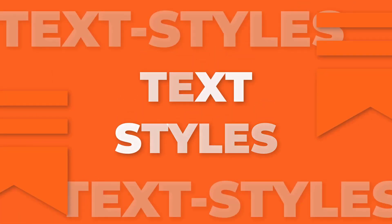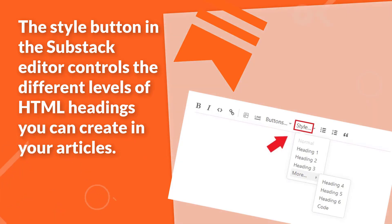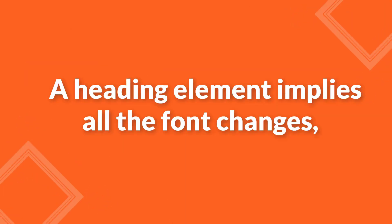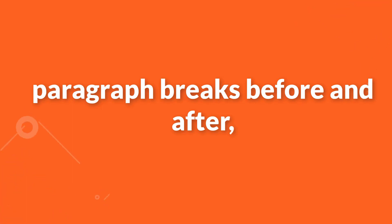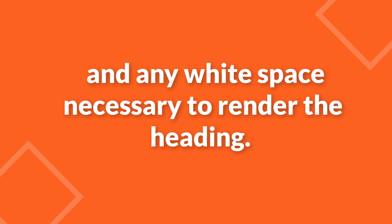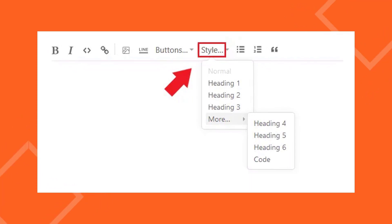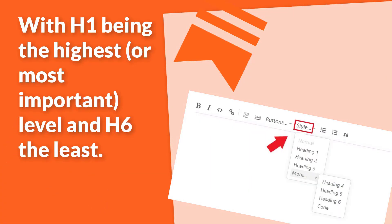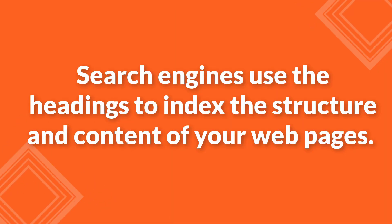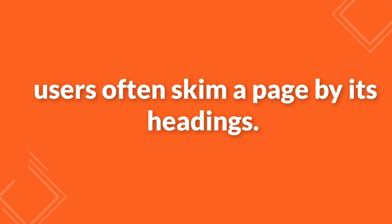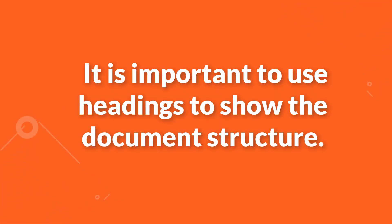Number 5: Text Styles. The Style button in the Substack editor controls the different levels of HTML headings you can create in your articles. HTML defines six levels of headings. A heading element implies all the font changes, paragraph breaks, and any white space necessary to render the heading. The heading elements are H1, H2, H3, H4, H5, and H6, with H1 being the highest or most important level and H6 the least. Search engines use headings to index the structure and content of your web pages. In the context of newsletters, users often skim a page by its headings, so it is important to use headings to show the document structure.